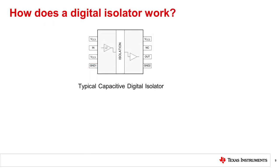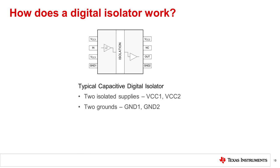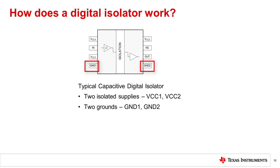How does a digital isolator work? A pin diagram of a typical digital isolator is shown here. It consists of two isolated supplies, VCC1 and VCC2, two grounds, GND1 and GND2, and input and output pins on either side referred to the respective grounds.